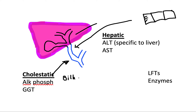ALT is known as alanine transaminase, and AST is aspartate aminotransferase. If you remember that ALT has an 'L' in it, that is what makes it specific to the liver — that's how to remember it's liver-specific. ALT is only produced by the liver, whereas AST is produced by different parts of the body, including the kidney and the heart.